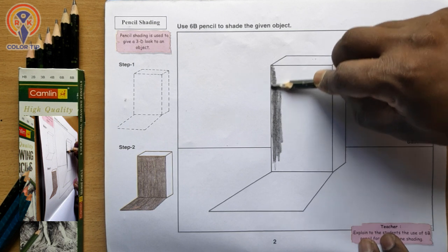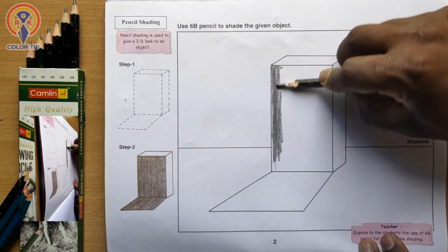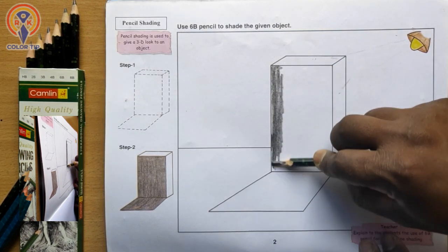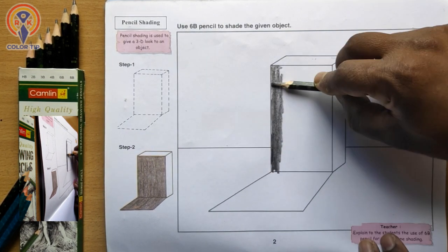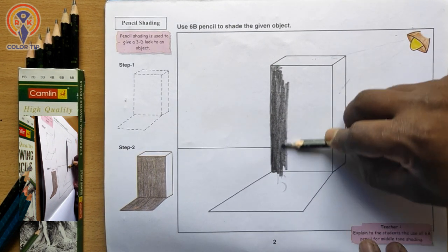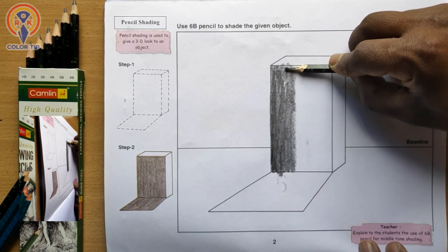Carefully shade near the lines here. I mean at this line - even if you cross these lines, you can erase it afterwards, so don't worry about this one. This part, carefully shade at the top edge.